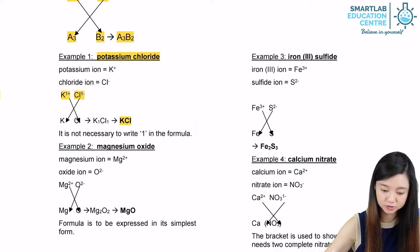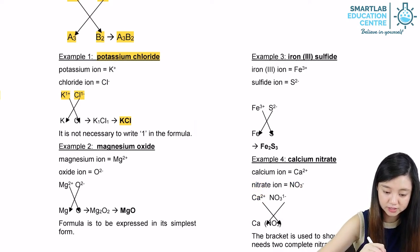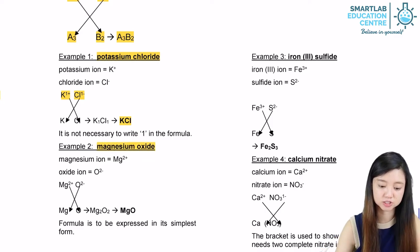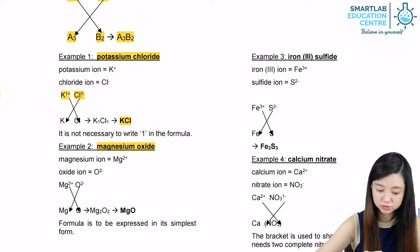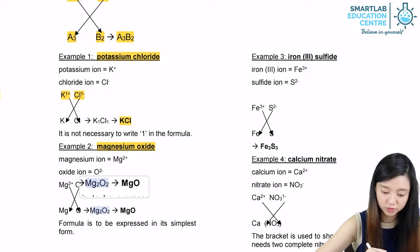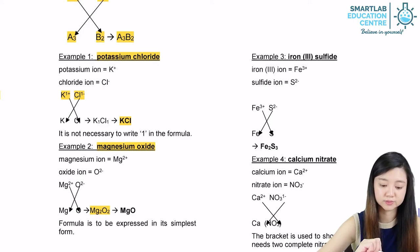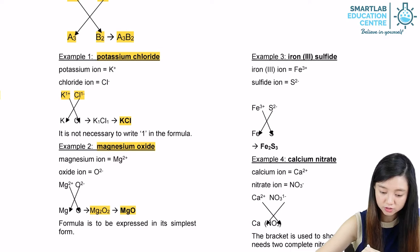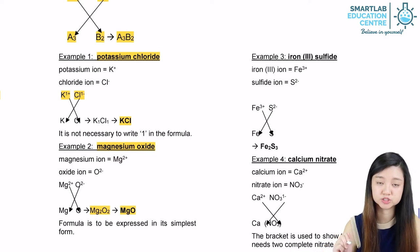We look at example 2, magnesium oxide. Magnesium has a charge of 2 plus, while oxide has a charge of 2 minus. If we do the crisscross method, we will be getting Mg₂O₂. And because both are 2s, we can use the simplest form, just put it as MgO.